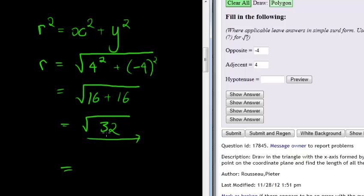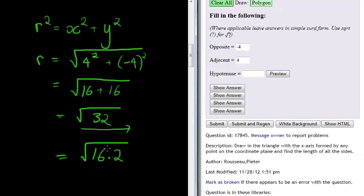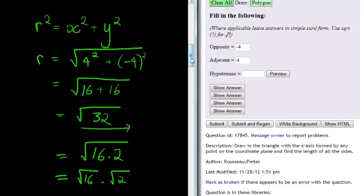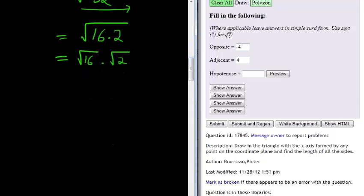For example, 16 is a complete square and it can divide into 32. So I can write this as 16 times 2, where 16 is a perfect square but 2 is not. And that's the whole idea. So then I can take the square root of 16 times the square root of 2. This is what we mean by simple surd form.